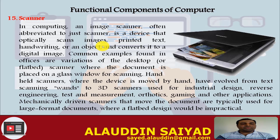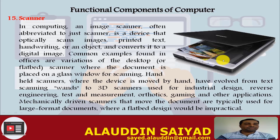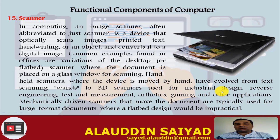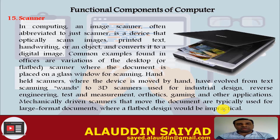Scanner. An image scanner, often abbreviated to just scanner, is a device that optically scans images, printed text, handwriting, or objects and converts them to a digital image. Common examples found in offices are flatbed scanners where the document is placed on a glass window for scanning. Handheld scanners, where the device is moved by hand, have evolved from text scanning to 3D scanners used for industrial design, reverse engineering, test and measurement, orthotics, gaming, and other applications. Mechanically driven scanners that move the document are used for large-format documents where a flatbed scanner would be impractical.